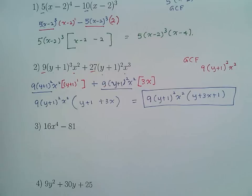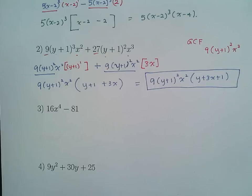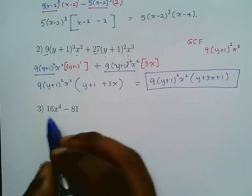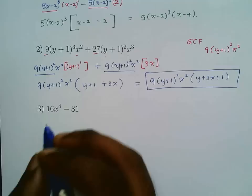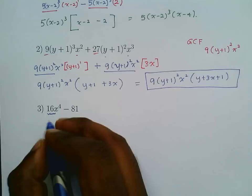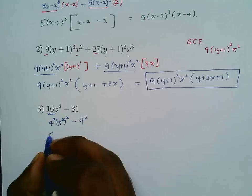For the next example, there are only two terms. With two terms, you either take out a common factor — but there are none — or use difference of two squares. Express each piece as a perfect square: 16 = 4², x⁴ = (x²)², and 81 = 9². So the expression becomes (4x²)² - 9².